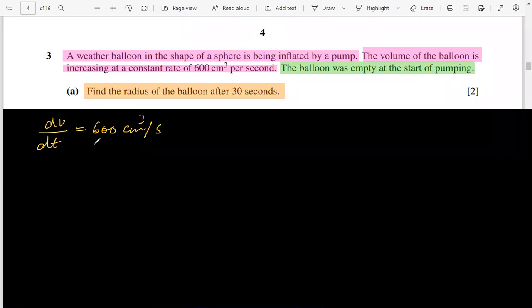Okay, volume of balloon. Balloon is sphere, therefore volume of sphere is equal to 4/3 π r³. It means we need volume of sphere to find the radius. So after 30 seconds...